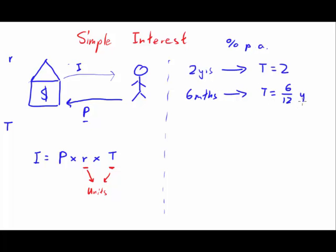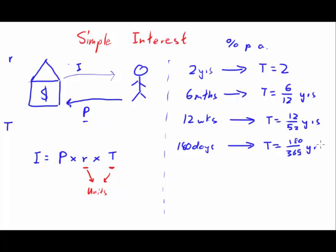Let's say it was 12 weeks - T would equal 12/52. If it's 180 days, T would equal 180 over the total number of days in a year, which is 365 years.